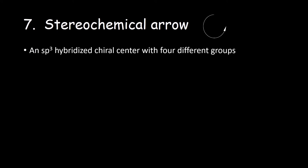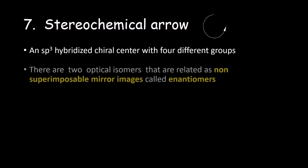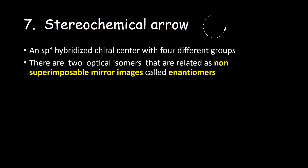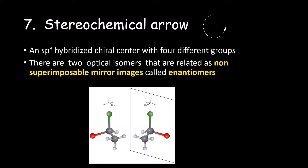A chiral center is an sp3 hybridized carbon with four different groups attached. There are two possible different spatial distributions of these four different groups, giving two possible optical isomers. These optical isomers are called enantiomers — if an imaginary plane were placed between the two molecules, they are related as mirror images of one another, and they are not superimposable as there is no internal plane of symmetry.